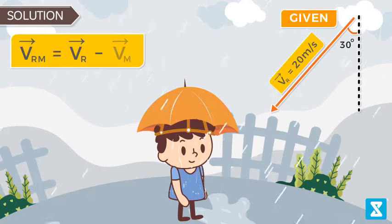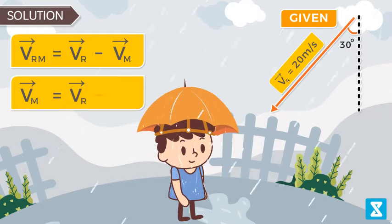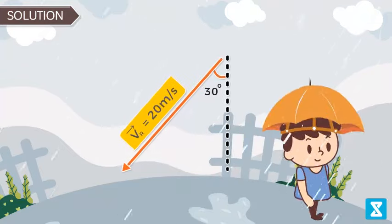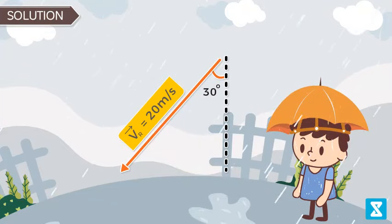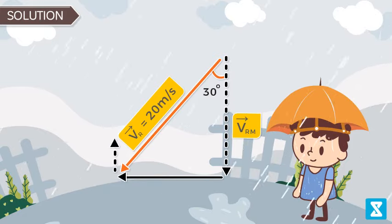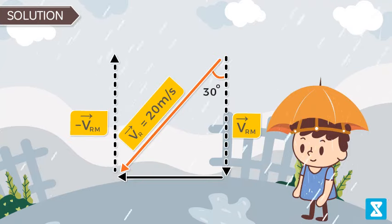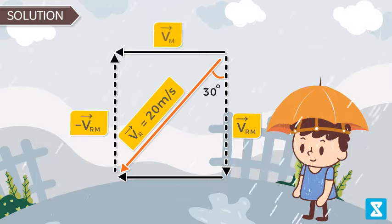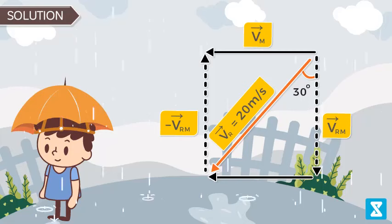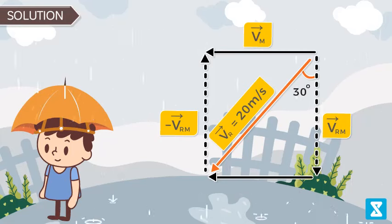We are required to find the value of v_m. We are given that v_r is in the direction at an angle of 30 degrees with the vertical and the value of v_r is 20 meters per second. If v_rm is in the vertically downward direction, then minus v_rm will be in the vertically upward direction. So the resultant will be towards the left, which is the velocity of the man — meaning the man has to run towards the left.